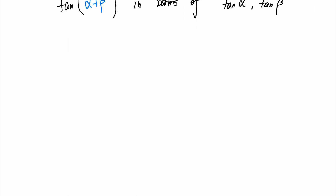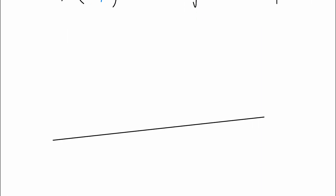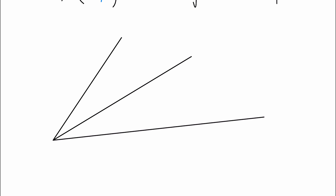Let's see. Let's draw the angles first. We have two angles — let's place them at one vertex. Let's name this angle alpha and this one beta. And obviously, since there's tangent, there's trigonometry, so let's put it in a right triangle to make it easier to prove. Let's draw some perpendicular lines.